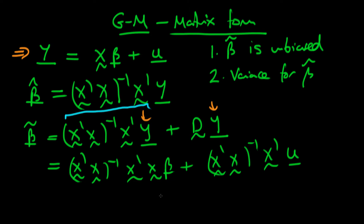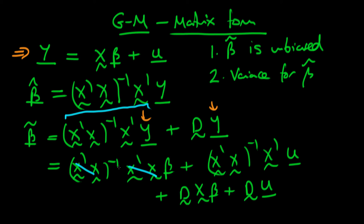Writing in for d we can write this as d times x beta plus d times u. Notice that we can cancel x-prime x inverse with x-prime x, since that matrix inverse times itself gives the identity matrix. So beta tilde simplifies to beta plus all this other stuff.